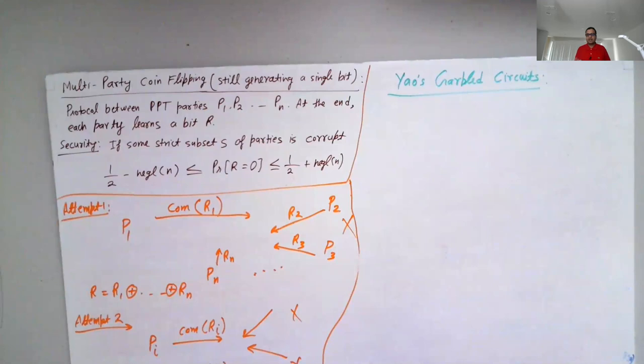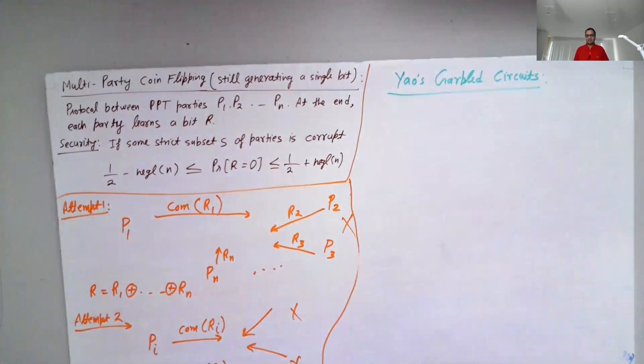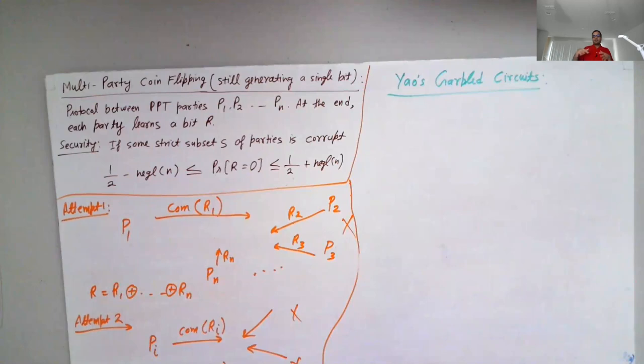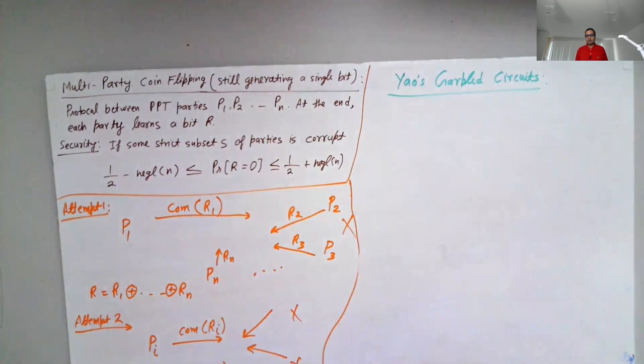Instead of a single oblivious transfer, we use multiple OTs. We work with the circuit representation of function f and go one gate at a time. Each gate has a small input and small output, so you can use oblivious transfer to evaluate that gate. We carefully combine several instances to go gate by gate, starting from inputs and ending with the output. That's the high-level idea — we'll go through the full construction in the next class. I'll stop here for today.